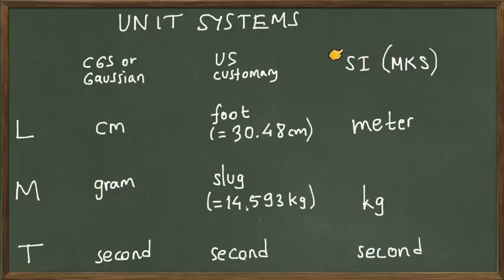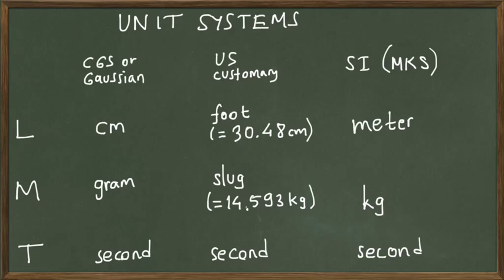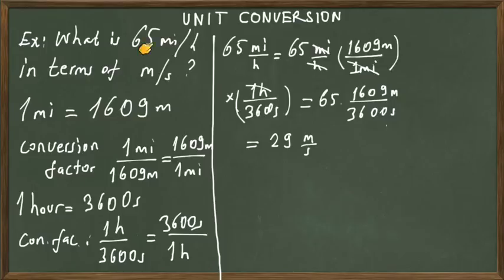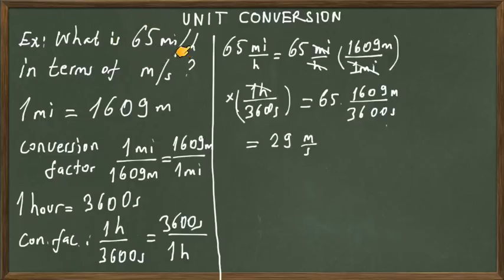In this class, in most of our problems and in lab experiments, we will use the SI unit system, measuring length in meters, mass in kilograms, and time in seconds. In physics, we often face the problem of converting a physical quantity into another unit system — for example, converting a speed given in miles per hour into meters per second.